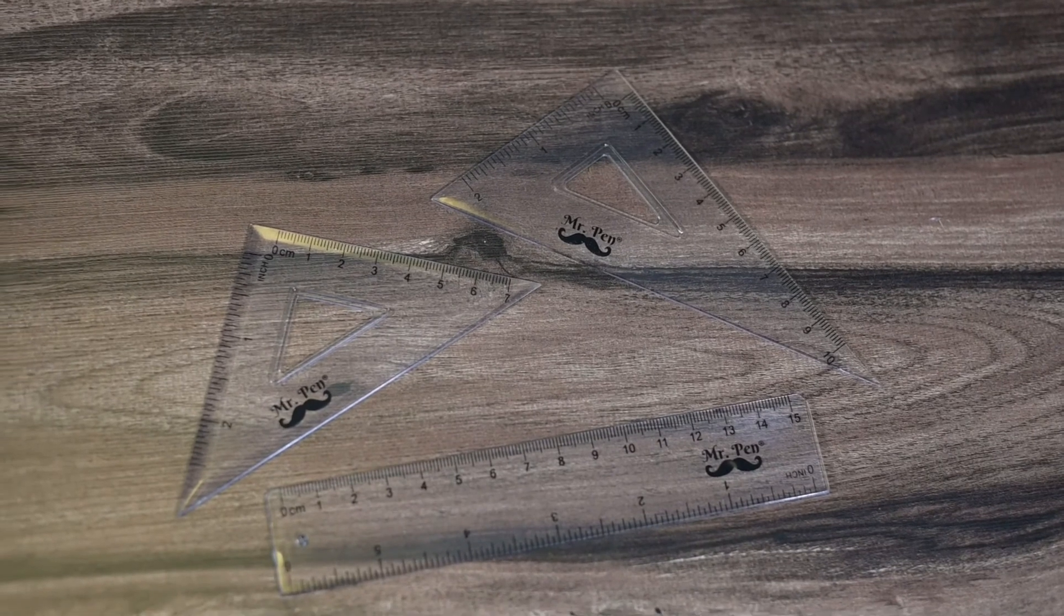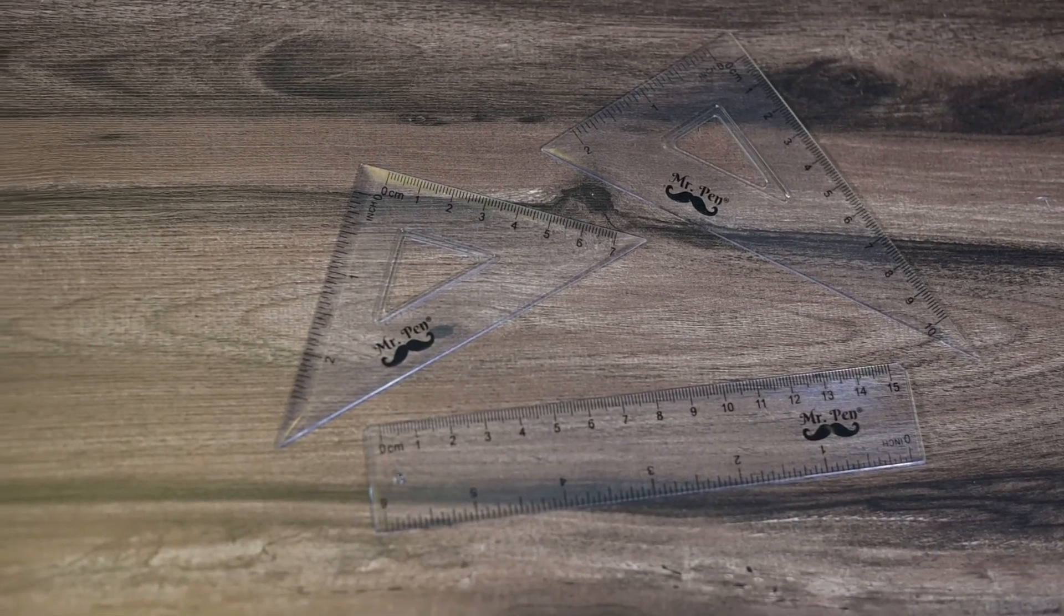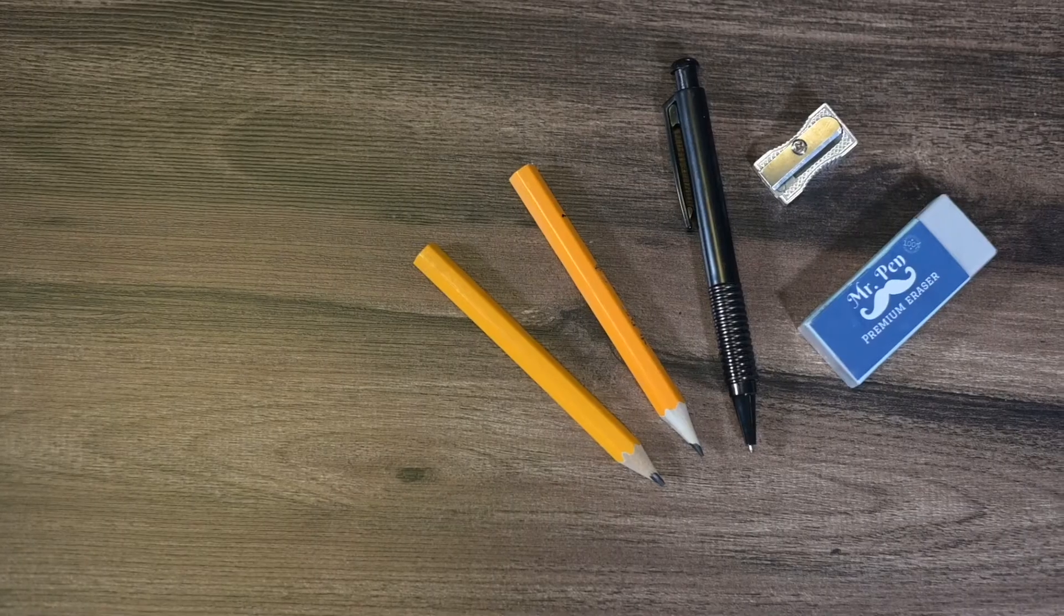The pack includes two square triangles, one 45 degrees, one 30 to 60 degrees, and one 6-inch ruler. They are all marked with inch and centimeter measurements.